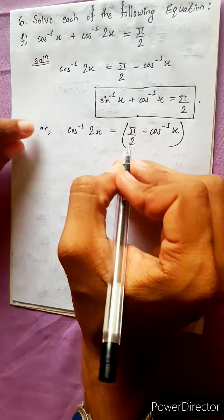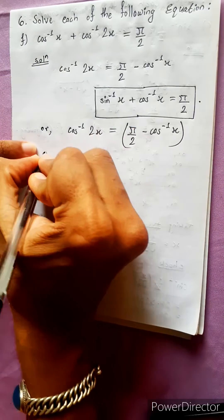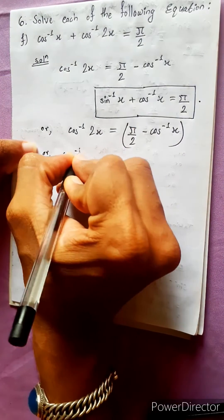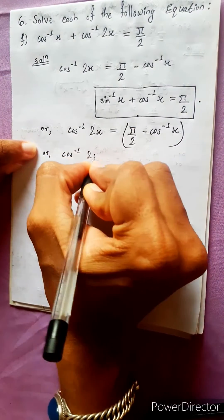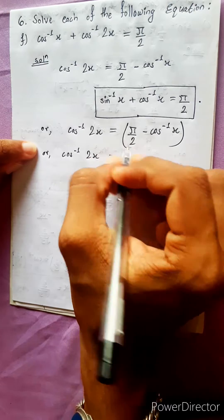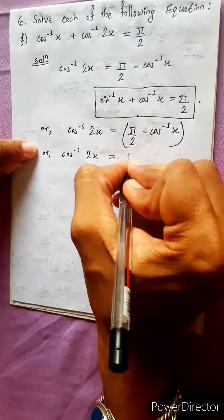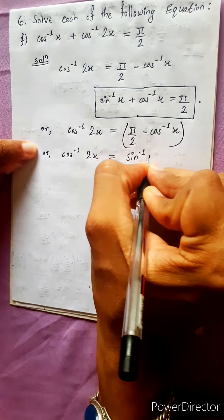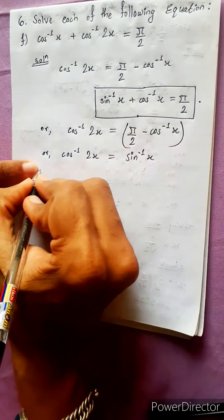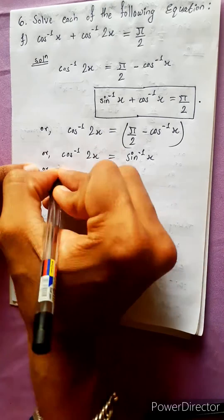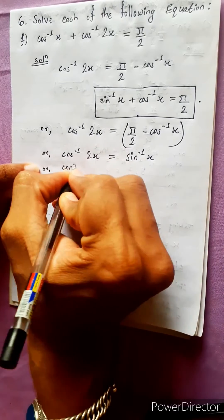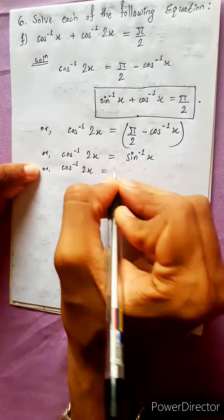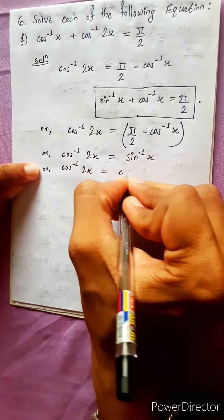This simplifies to sin inverse x. So 2x equals to sin inverse x. The formula is cos inverse 2x equals to sin inverse x — sin and cos change.